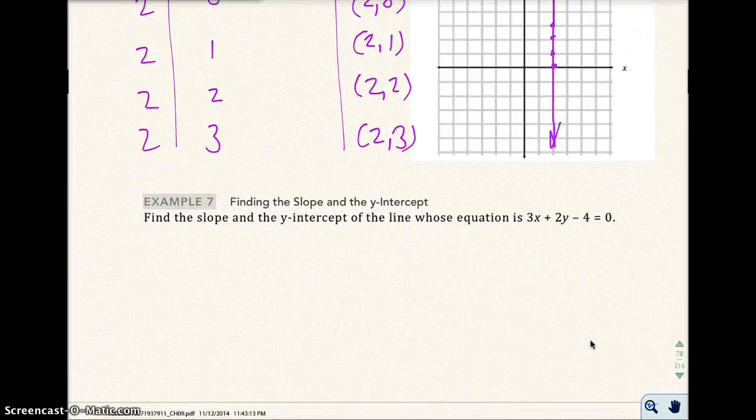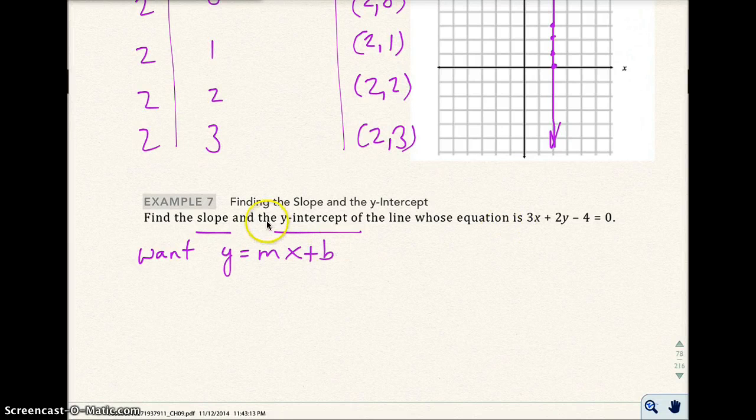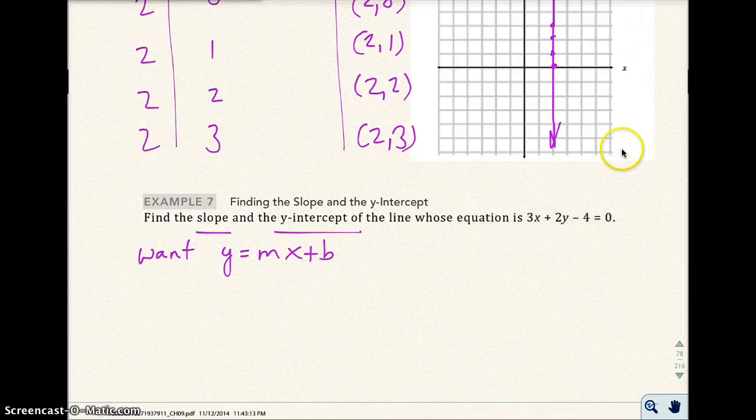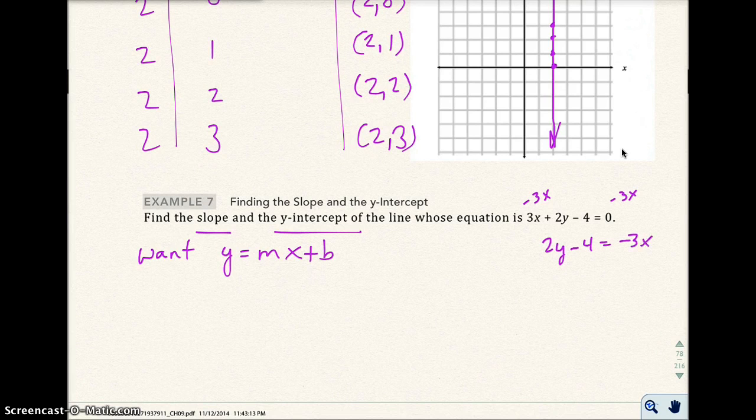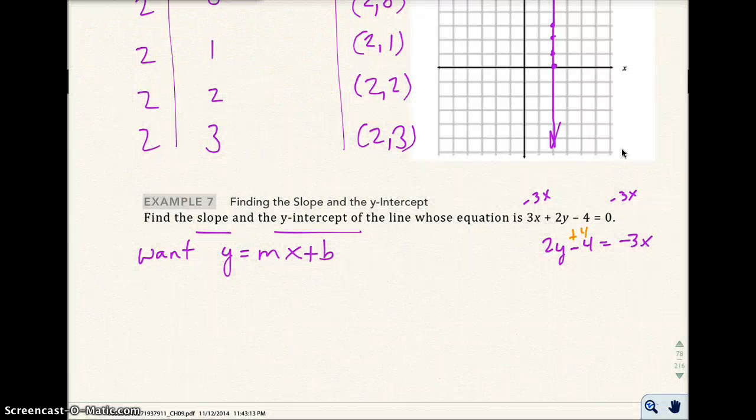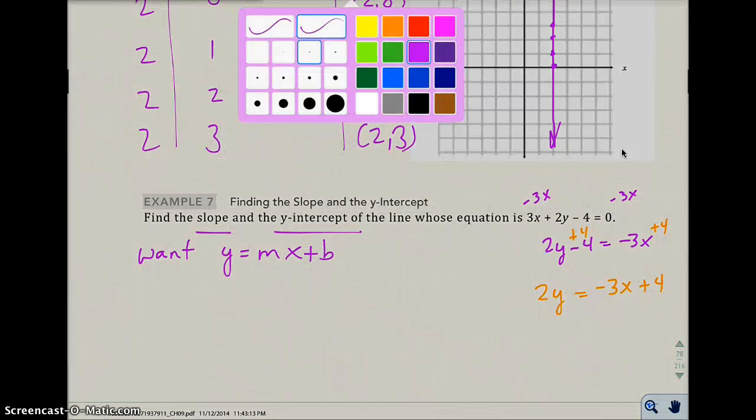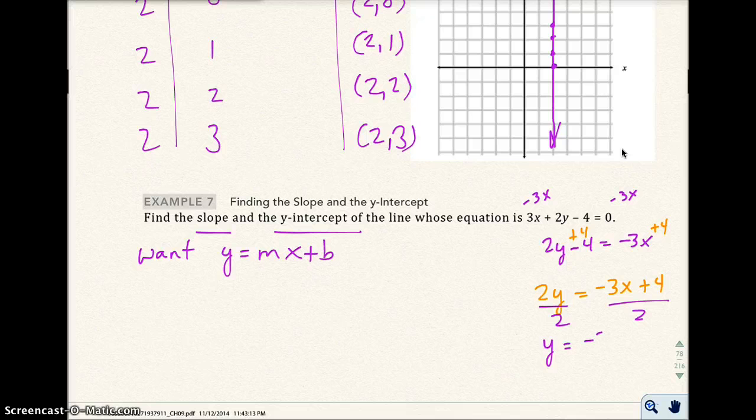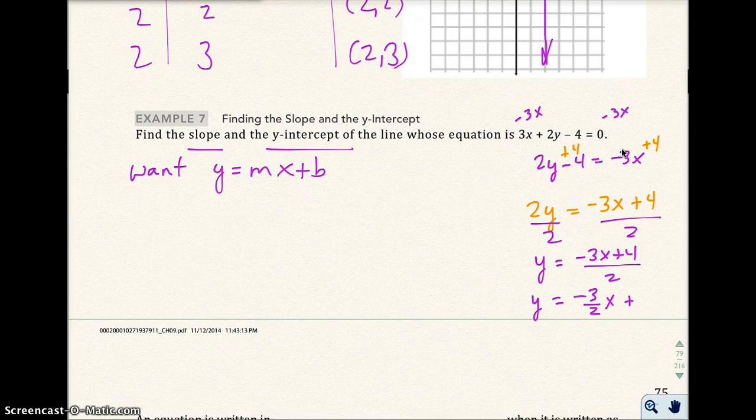Let's go to example 7 and we want to find the slope and the y-intercept of the line. The equation is 3x plus 2y minus 4 equals 0. If you want to find the slope and the y-intercept, you want y equals mx plus b because we know this is our slope and that's the y-intercept. We're going to solve for y here. I want to subtract 3x from both sides. I get 2y minus 4 equals -3x. If I add 4 to both sides, I get 2y equals -3x plus 4.